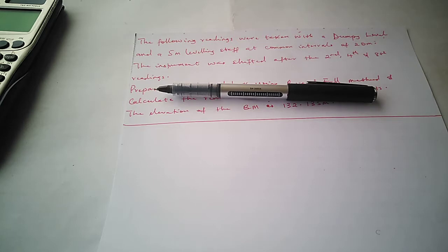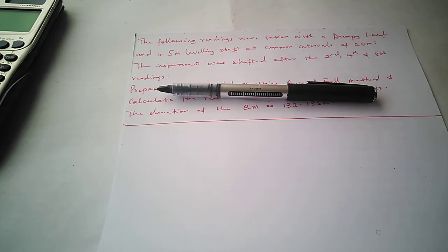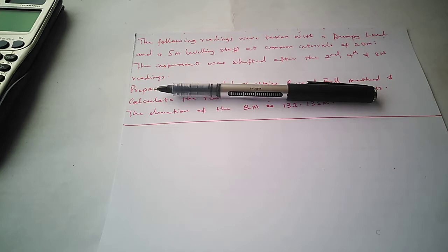A benchmark is a point of known elevation — it's like a control. It's where you start your leveling exercise when you go to site. It can be a well-defined benchmark or a temporary benchmark. We are going to consider two methods to compute leveling: the rise and fall method and the height of instrument method. Today we are going to use the rise and fall method to solve this particular problem.